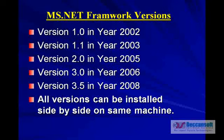The advantage of all these versions is that you can install them on your machine side by side. You can download Framework 1.1 and install it, Framework 1.0, 2.0, 3.0, 3.5 — all the frameworks can be installed on your machine at one place. It's not like if you have 2.0, you cannot install 1.1. It's not like that.